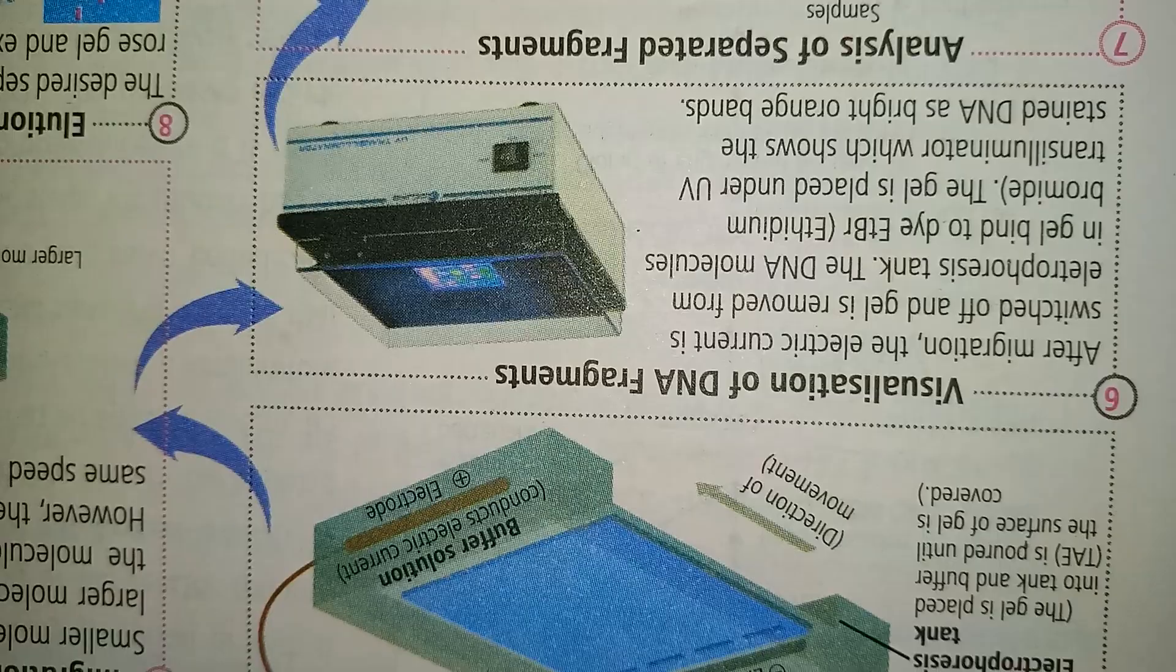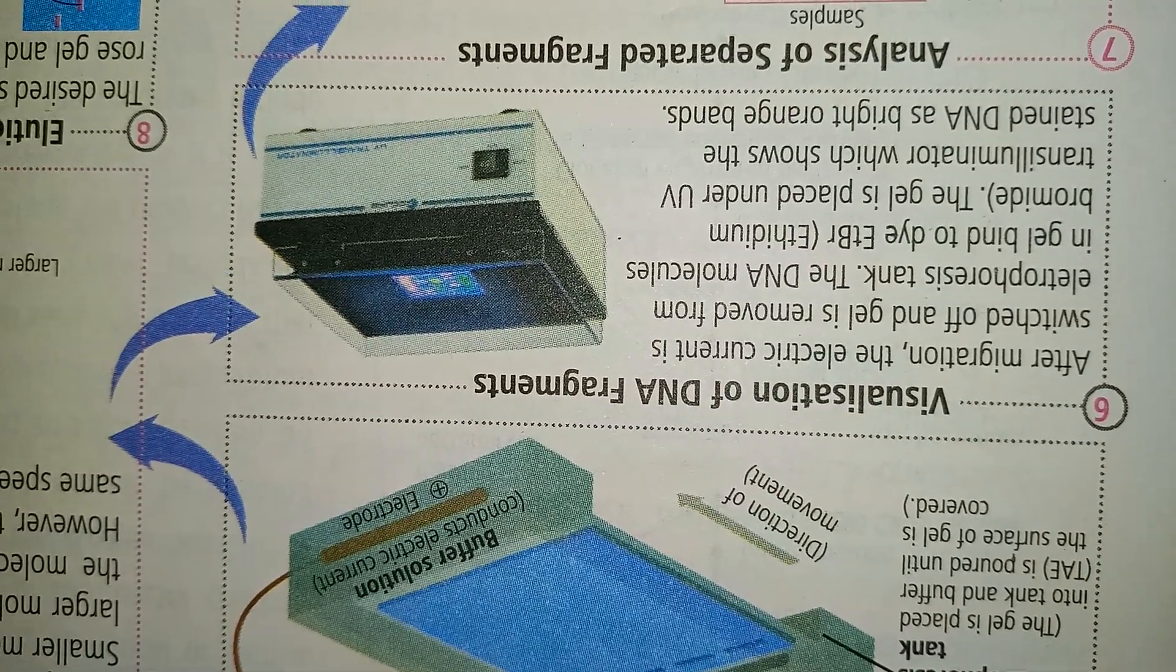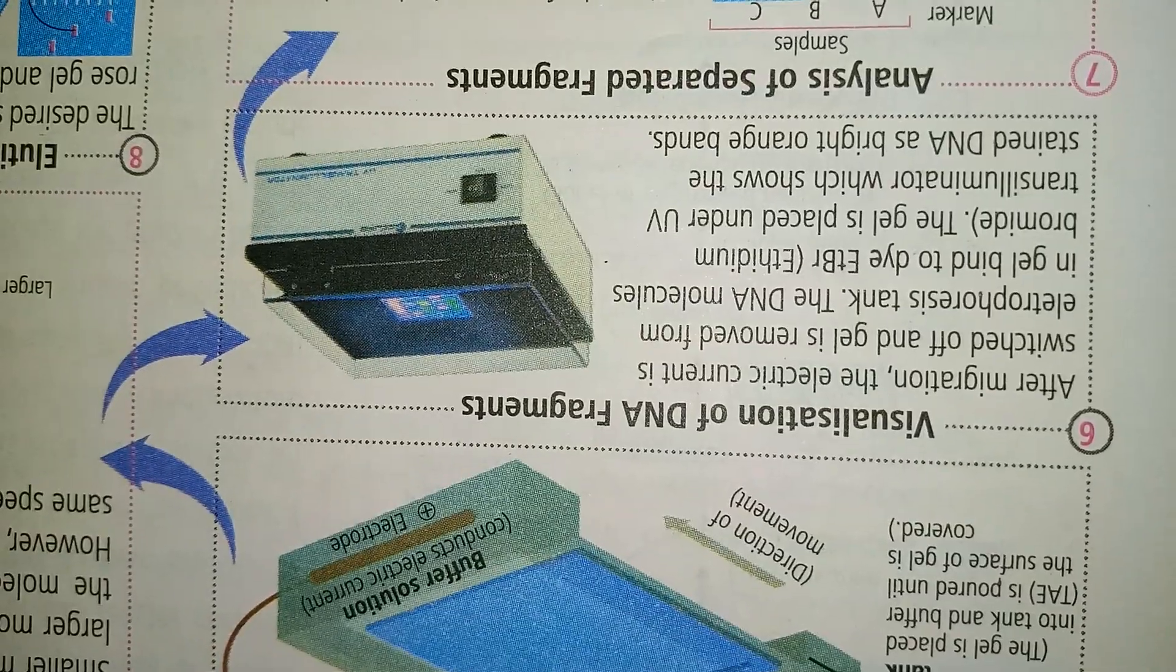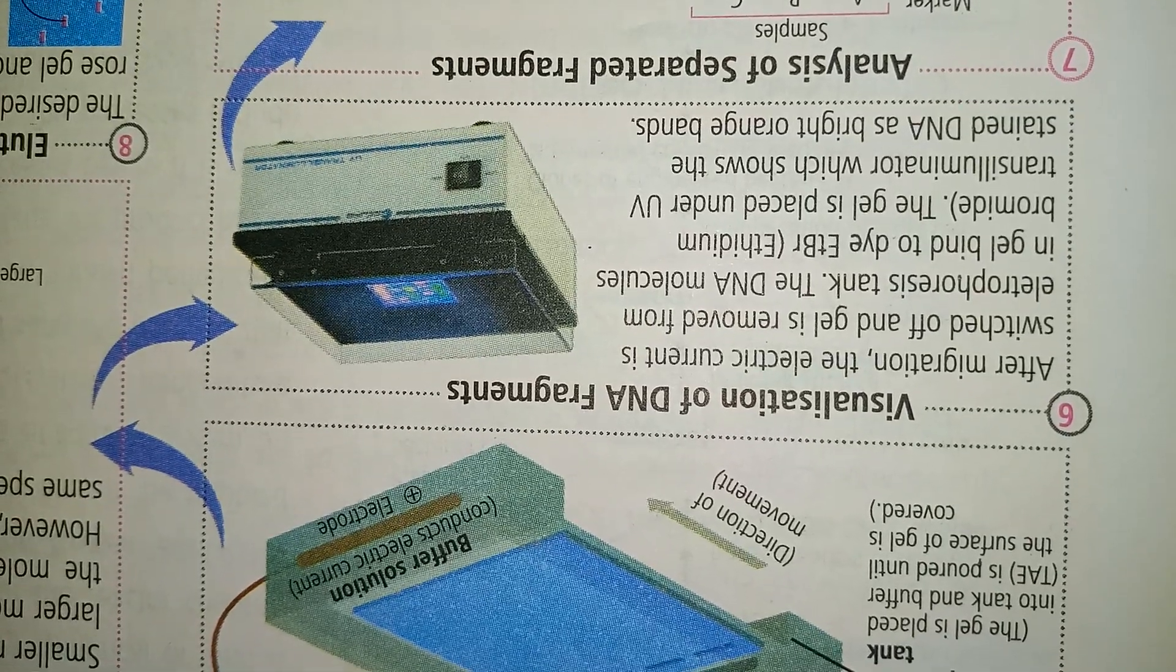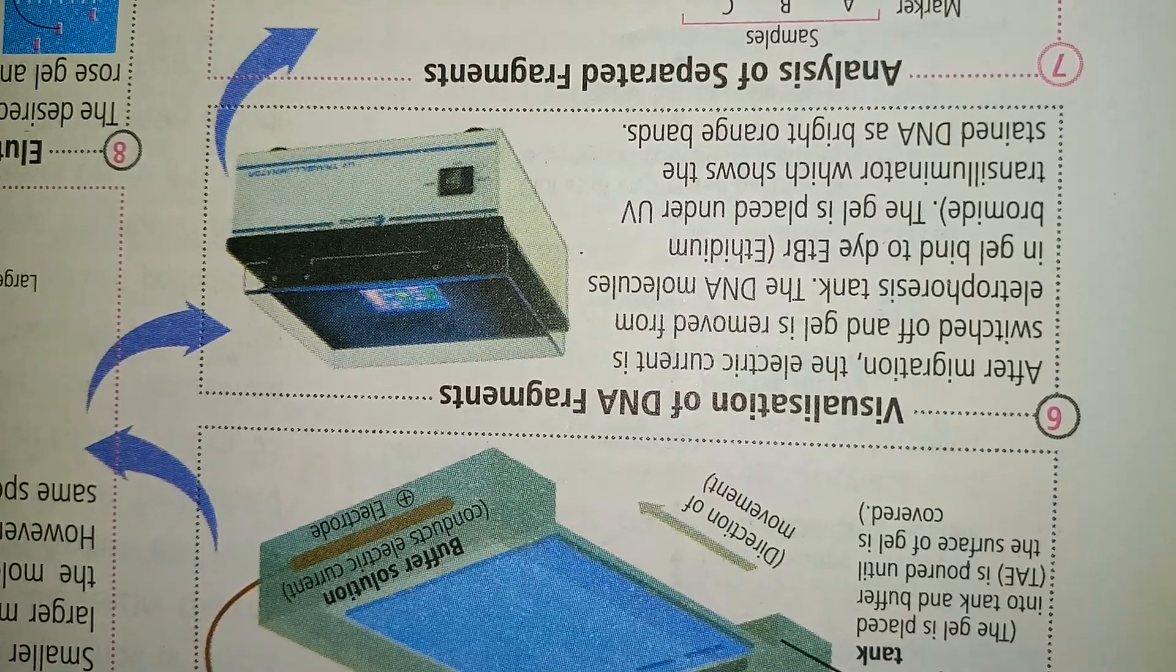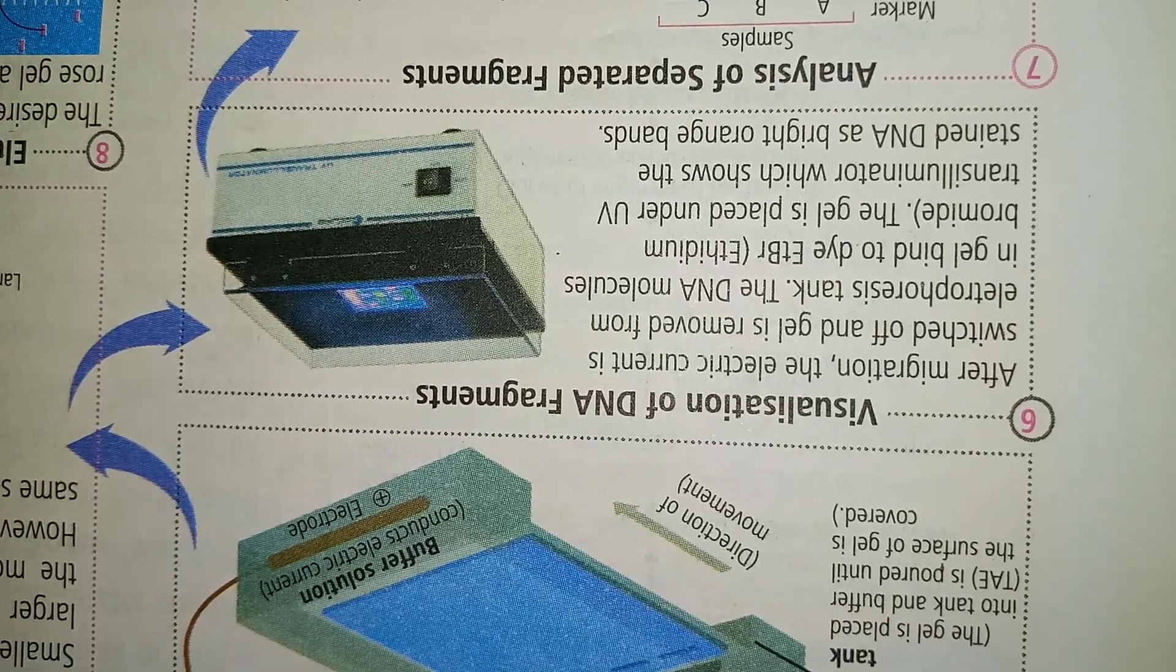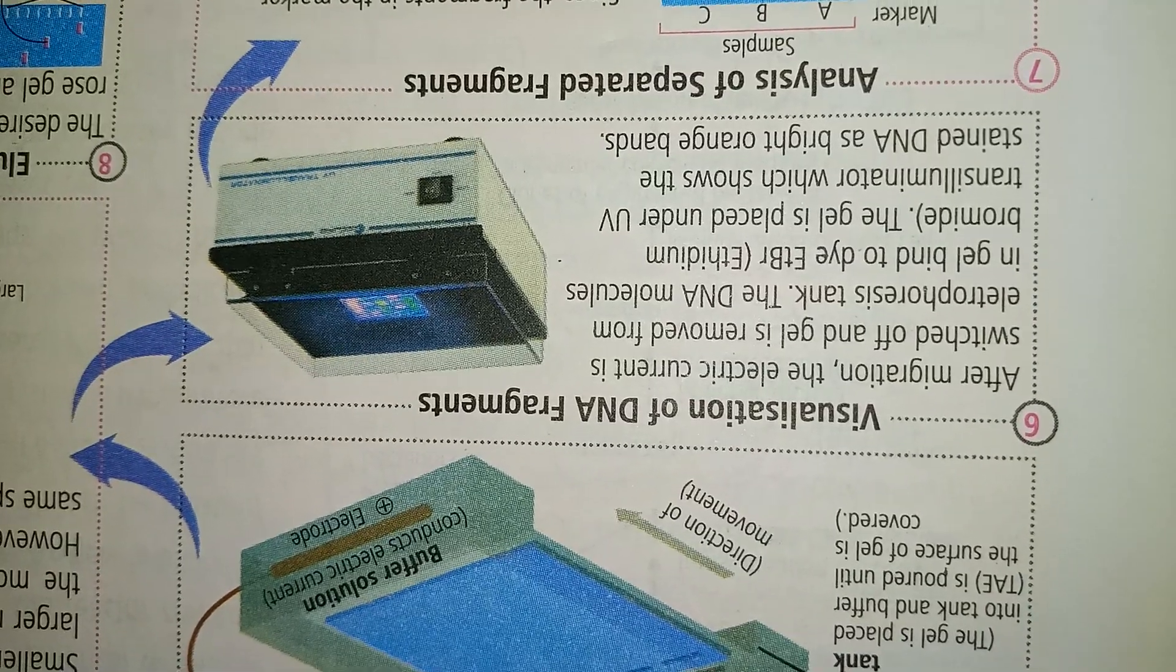After migration, visualization of DNA fragments: after the migration, electric current is switched off and gel is removed from the electrophoresis tank. DNA molecules bind to dye ethidium bromide. The gel is placed under the UV transilluminator, which shows stained DNA as a bright fluorescent band.